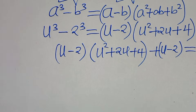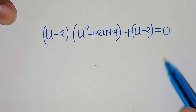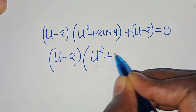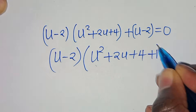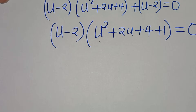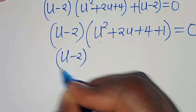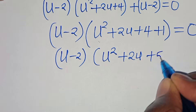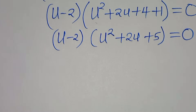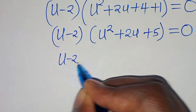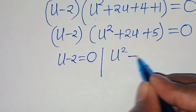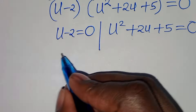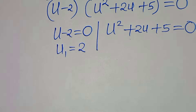Factoring out u minus 2, we get u minus 2 times the quantity u squared plus 2u plus 4 plus 1, equals 0. That simplifies to u minus 2 times u squared plus 2u plus 5, equals 0. So u₁ = 2, and the second part is the quadratic u² + 2u + 5 = 0.